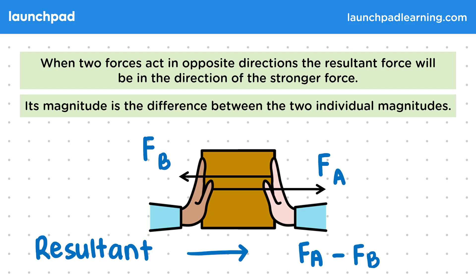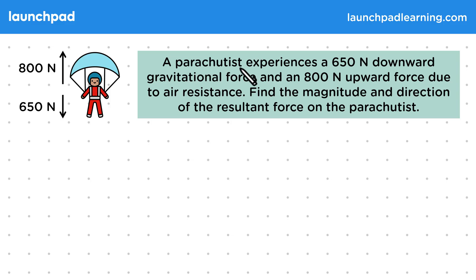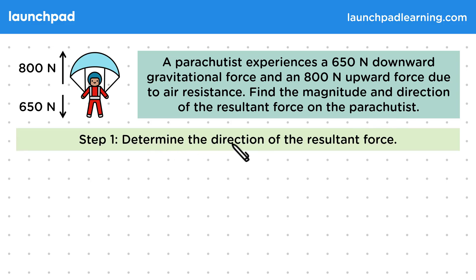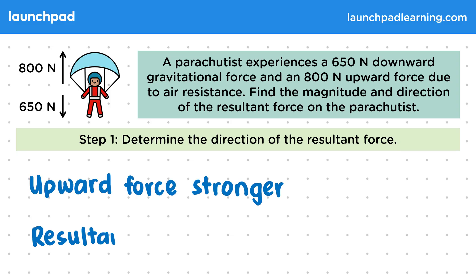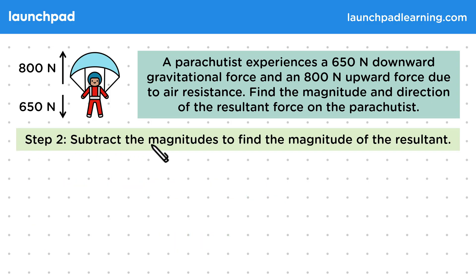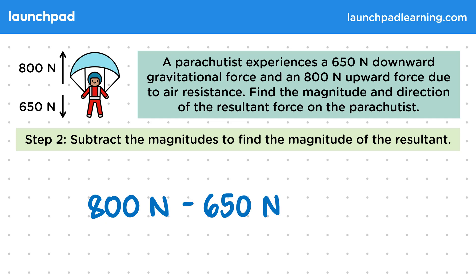Let's have a look at another example. A parachutist experiences a 650N downward gravitational force and an 800N upward force due to air resistance. Find the magnitude and direction of the resultant force on the parachutist. For step one, let's determine the direction: the upward force is stronger, so the resultant force is upward — this slows the parachutist down rather than making them move upwards. For step two, let's subtract the magnitudes: 800N minus 650N gives us a resultant force of 150N.